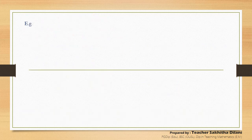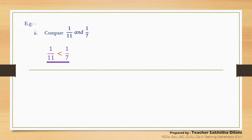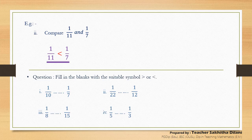Let's see another example. Compare one-eleventh and one-seventh. Can you tell me what is the fraction with the smaller denominator out of these two fractions? You can see that that is one-seventh. So it is the largest fraction, and the smallest fraction is one-eleventh. You can write it with symbols: one-eleventh is smaller than one-seventh. Now you are given a question: fill in the blanks with the suitable symbol, greater than or less than.